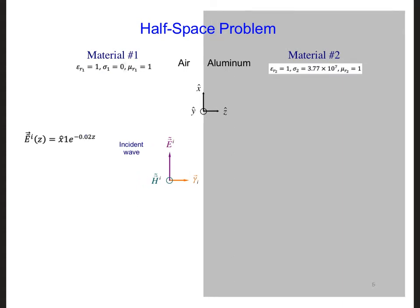Next, we can develop an expression for the incident magnetic field in terms of the incident electric field. So as you've seen before, we can get the incident magnetic field using this expression. I'm going to put eta 1 here because we're in material 1.